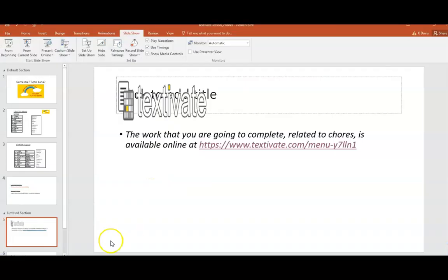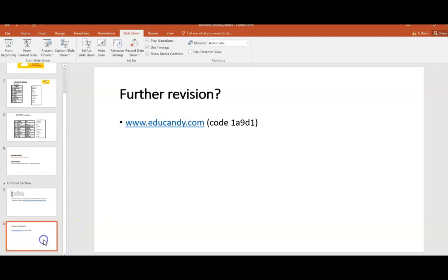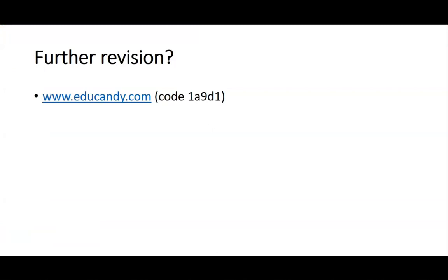Va bene. If you still need some more practice — if when you've done that you still don't feel like you really know it particularly well — you can do further revision, and you should already have used Educandy a few times. Educandy.com: when you go to the home page, it will ask you to enter a code, and that is the code you need for the set of vocab from today's lesson. You will spot that there are some new words in there, but in the next lesson we will start to go through the remaining chores so that you've done the whole lot.